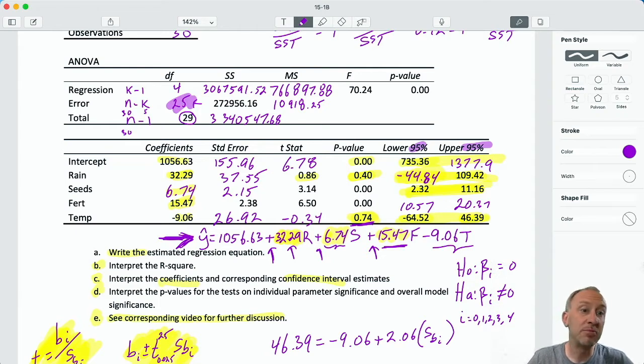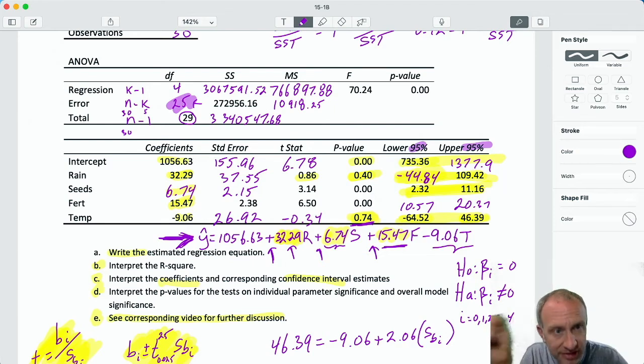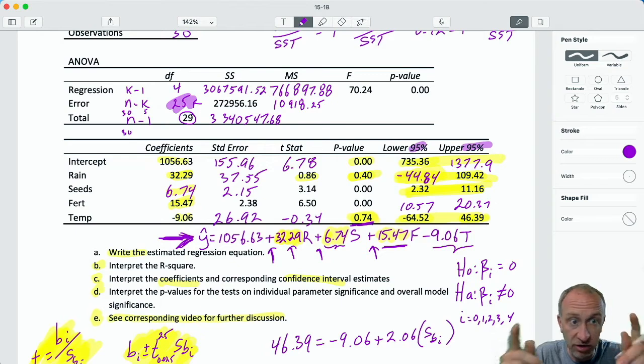But for now, I'm more concerned about the significance of those independent variables, because that tells us whether or not that variable is related to your dependent variable, whether or not there's a correlation between those two variables. A correlation, right? There's no causation here. These are measures of correlation. So if I go through, okay, my intercept is not zero. Well, that's fine.